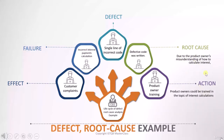So what action do we have to take? The product owner could be trained in the topic of interest calculation. If we train the product owner, then he will not write the wrong code. And if the code is not wrong, then all the lines of code will be fine, the interest calculation will also be okay, and the customer will not complain. So that is how they are all related with each other.